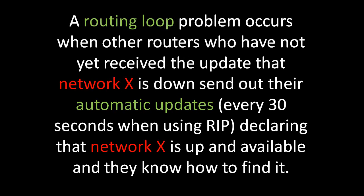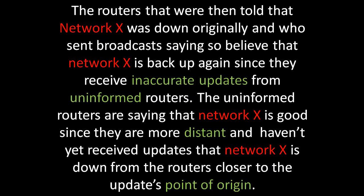A routing loop problem occurs when other routers who have not yet received the update that network X is down send out their automatic updates — such as every 30 seconds when using RIP — declaring that network X is up and available and they know how to find it. The routers that were originally told that network X was down, and who sent broadcasts saying so, believe that network X is back up again since they receive inaccurate updates from uninformed routers.